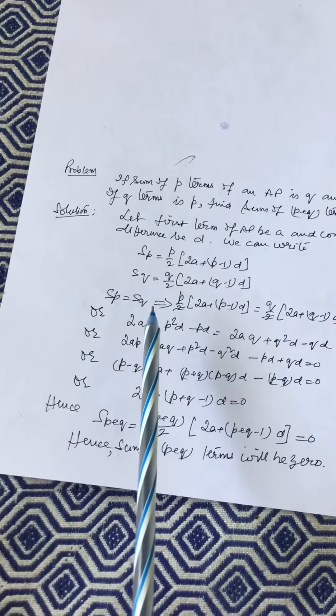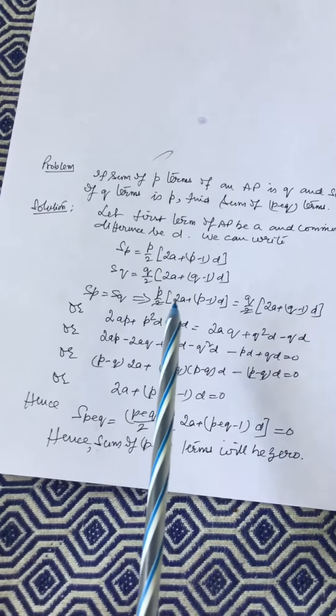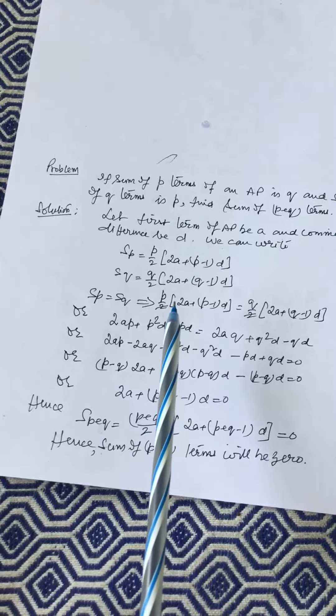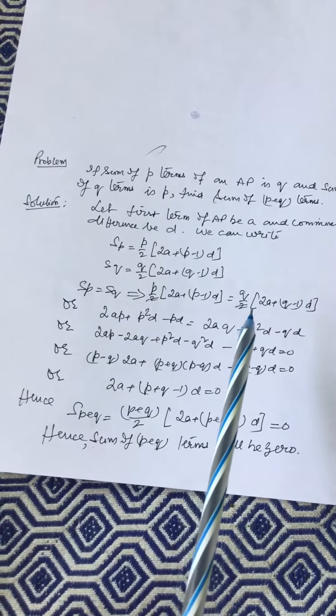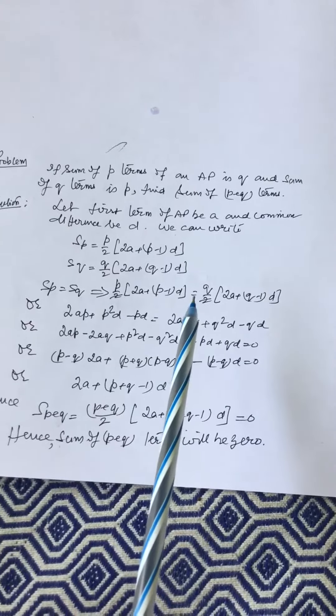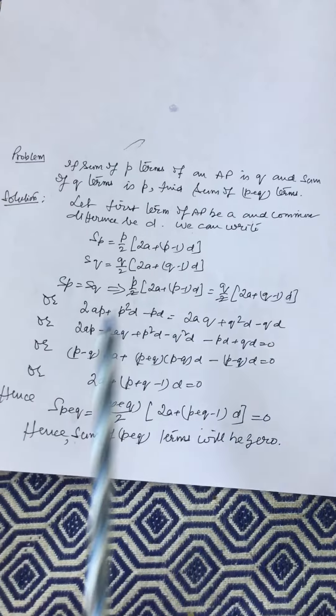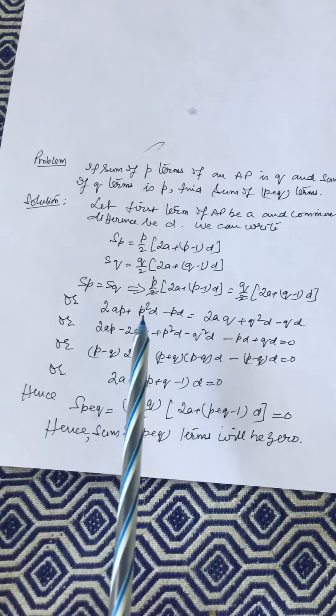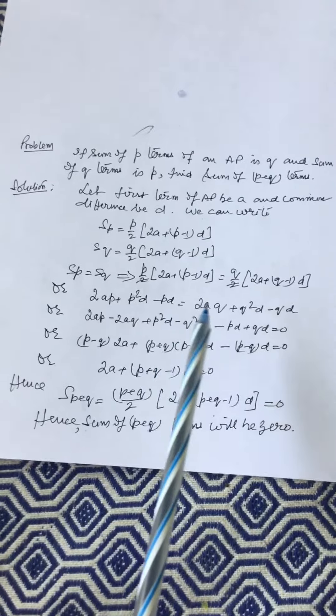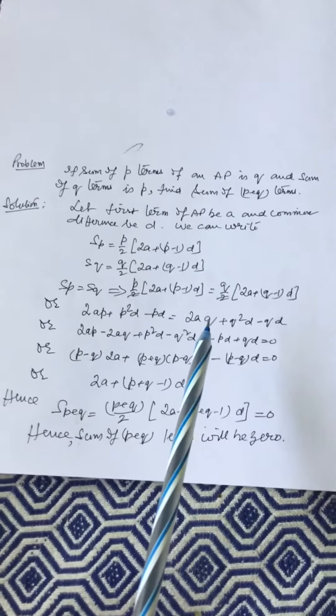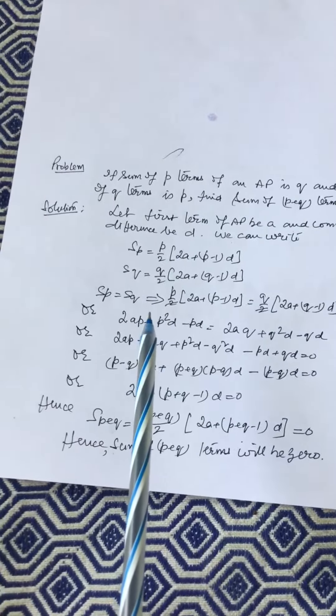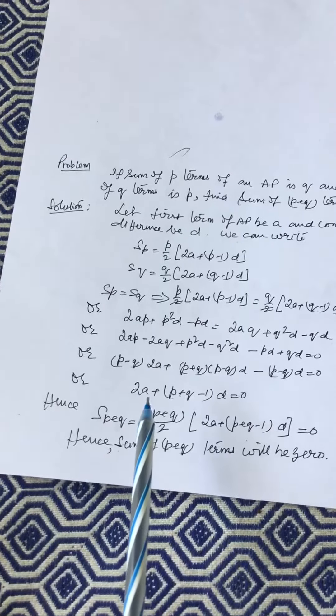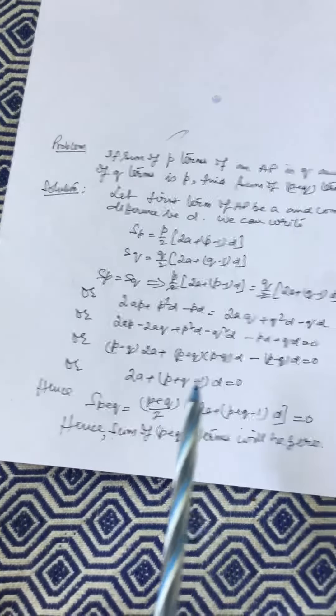SP = SQ is given. It gives (P/2)[2A + (P-1)D] = (Q/2)[2A + (Q-1)D], which simplifies to 2AP + P²D - PD = 2AQ + Q²D - QD. Simplifying we get 2A + (P+Q-1)D = 0.